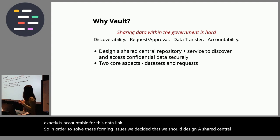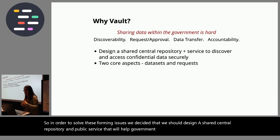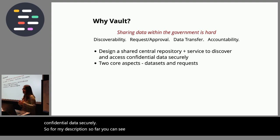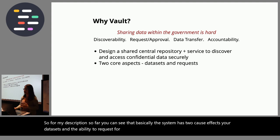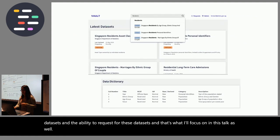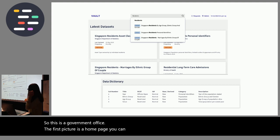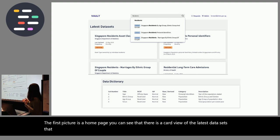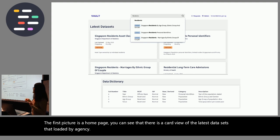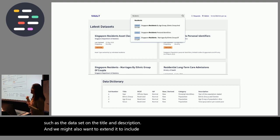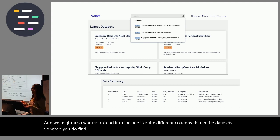To solve these four main issues we designed a shared central repository and accompanying service to help government officers discover and access confidential data securely. The system has two core concepts: data sets and the ability to request those data sets. Visually, this is what Vault currently looks like — a home page with a card view of the latest data sets uploaded by an agency, a list view, and a search functionality that searches data sets by title and description.